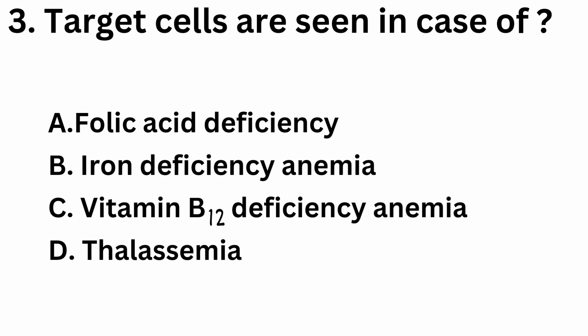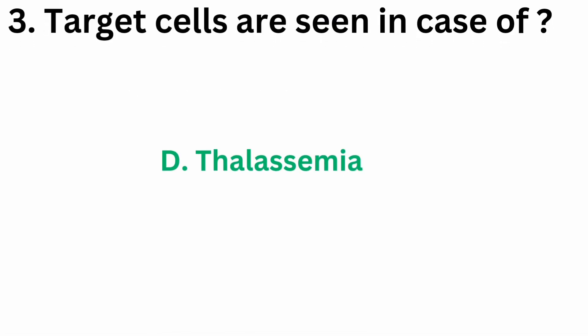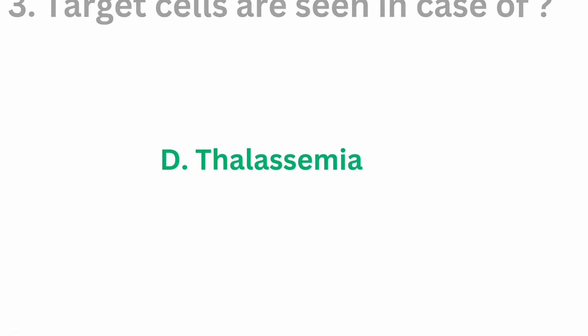Question number 3: target cells are seen in case of. Option A, folic acid deficiency. Option B, iron deficiency anemia. Option C, vitamin B12 deficiency anemia. Option D, thalassemia. The correct answer is option D, thalassemia. Target cells are seen in thalassemia.